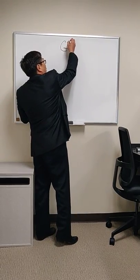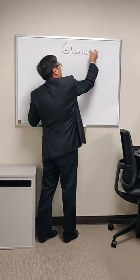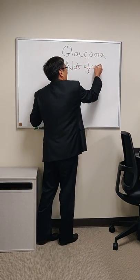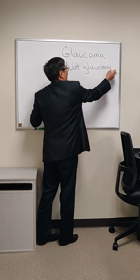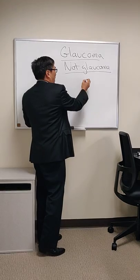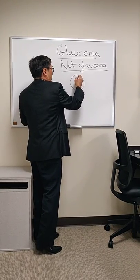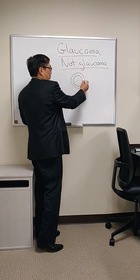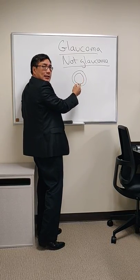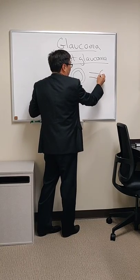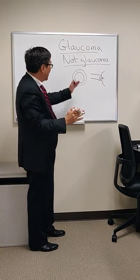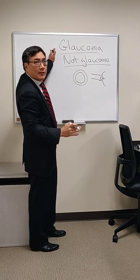Today we're going to try to differentiate glaucoma vision loss from non-glaucoma — in particular neuro-ophthalmic causes. Normally when you have glaucoma we see a distinctive ophthalmoscopic finding called cupping. The optic nerve is like a doughnut, where the rim is the doughnut and the hole is the cup. If we have a nerve that's cupped out, we have lost nervous tissue, and that cupping is the distinctive ophthalmoscopic finding of glaucoma.